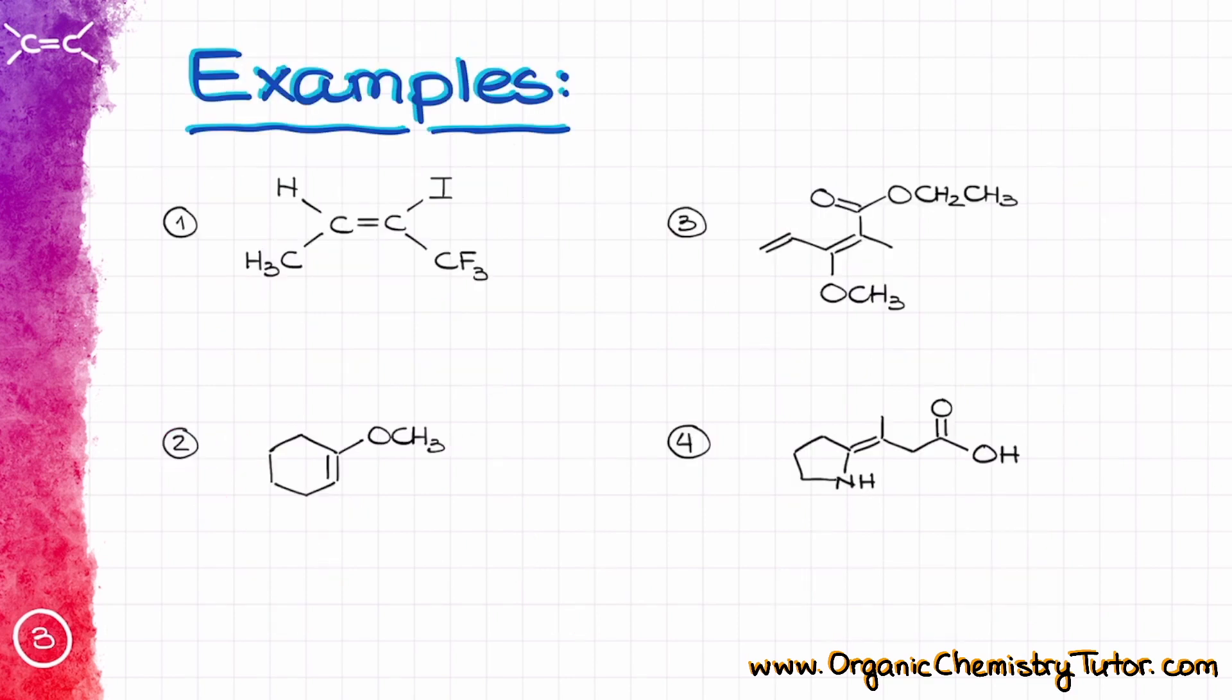Let's look at a few examples here and see if we can assign E and Z stereodescriptors to double bonds on these molecules. For molecule number one, I'm going to split my molecule in half like that and on the left side, the highest priority is going to go to the methyl group. On the right side, the highest priority is going to go to iodine because on the first level it is iodine versus carbon and iodine has the higher atomic number. So overall, iodine is going to have the higher priority. My two groups are across from each other like this, which means that according to our rules, this is the E isomer.